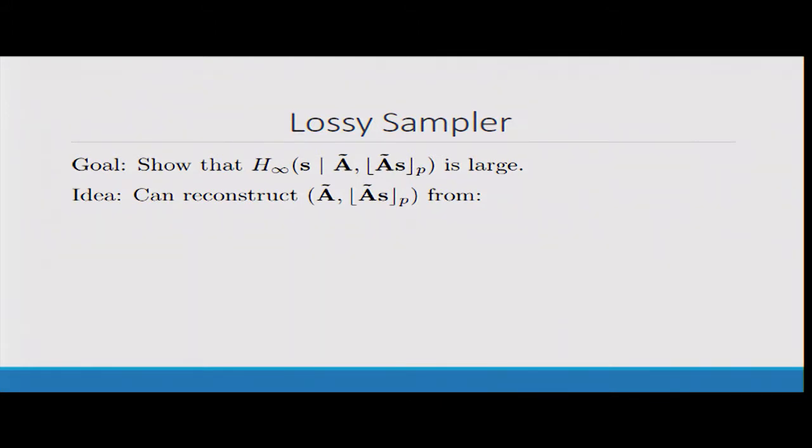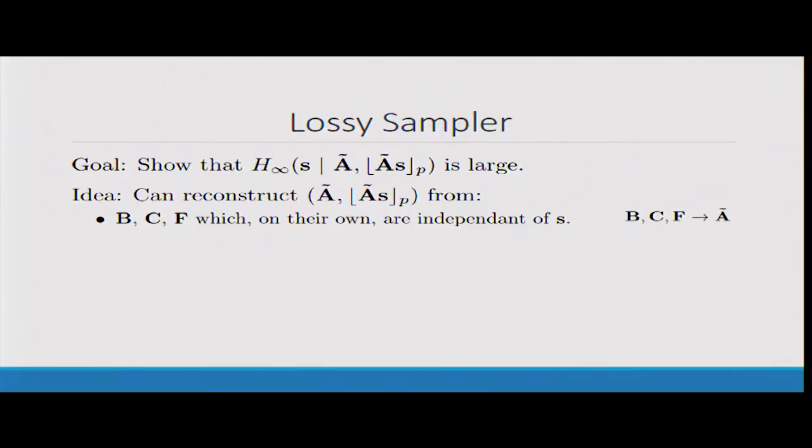Let's look at some high level look at how we actually prove this second property. Our goal is to show that the min entropy of s conditioned on both A tilde and A tilde s rounded is still large. To do this, we use a kind of reconstruction argument. We give you more information than A tilde, A tilde s rounded, and we show that even conditioned on this extra information, s still has high entropy.